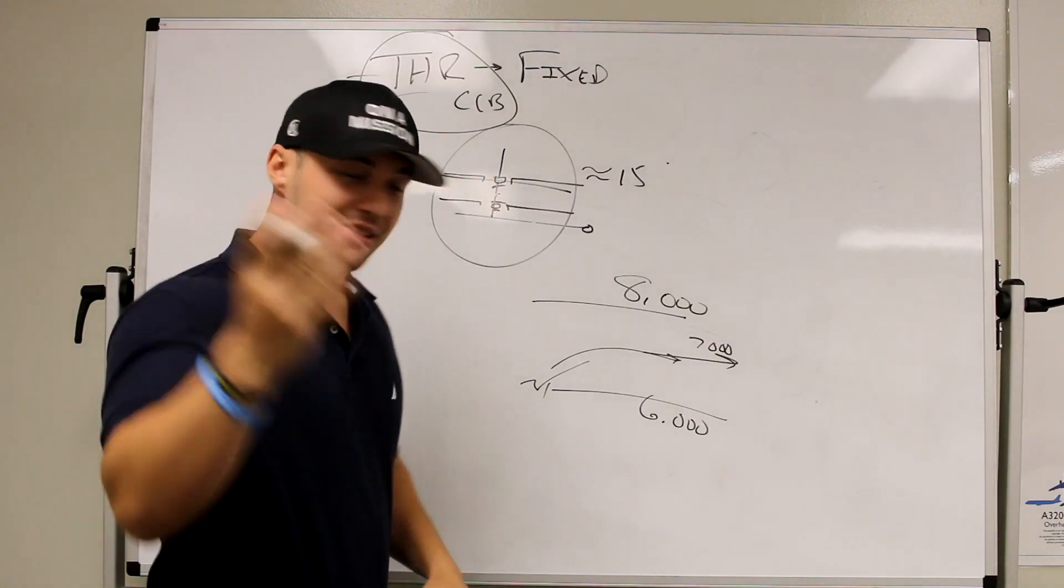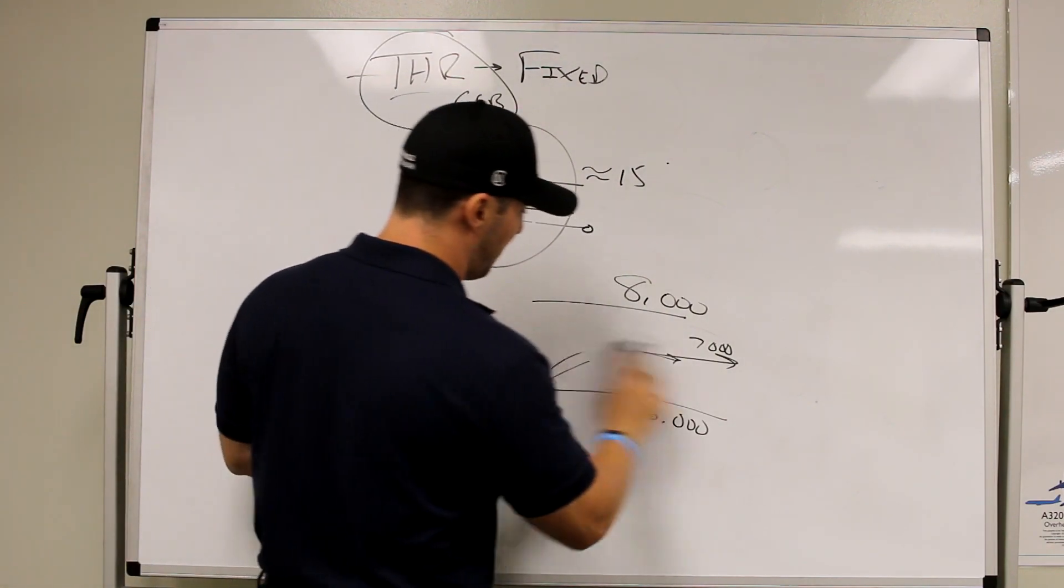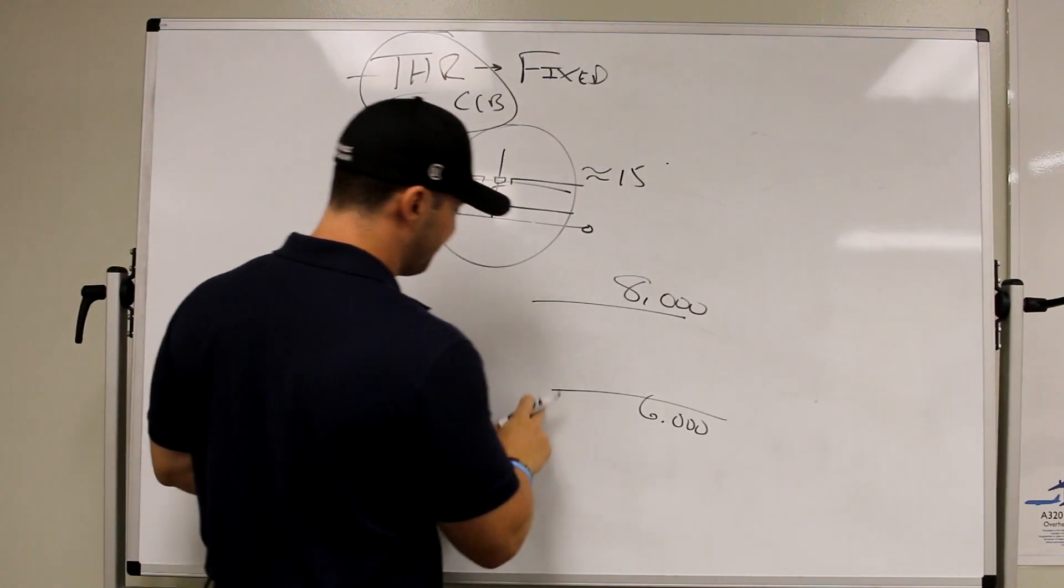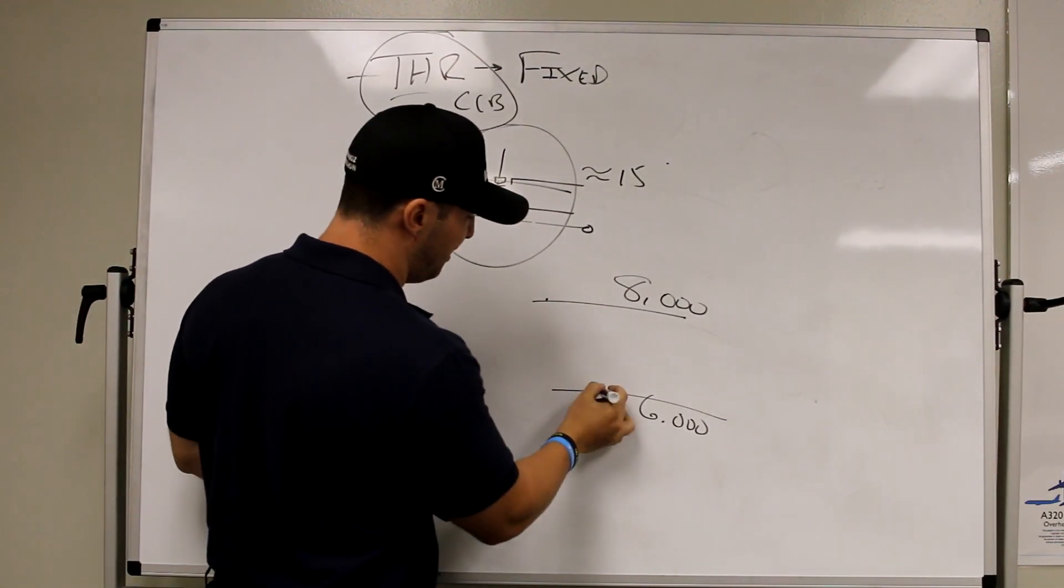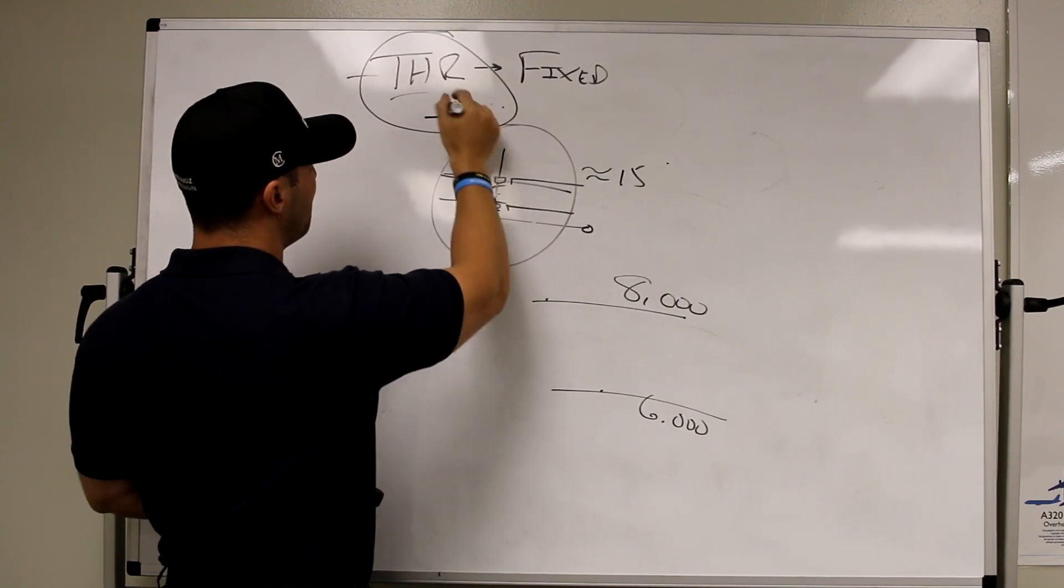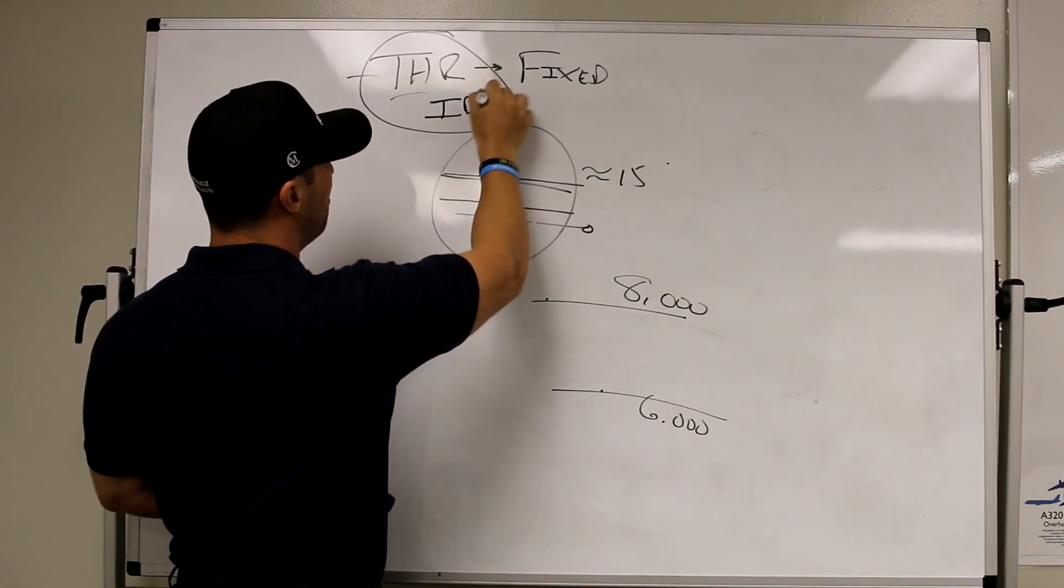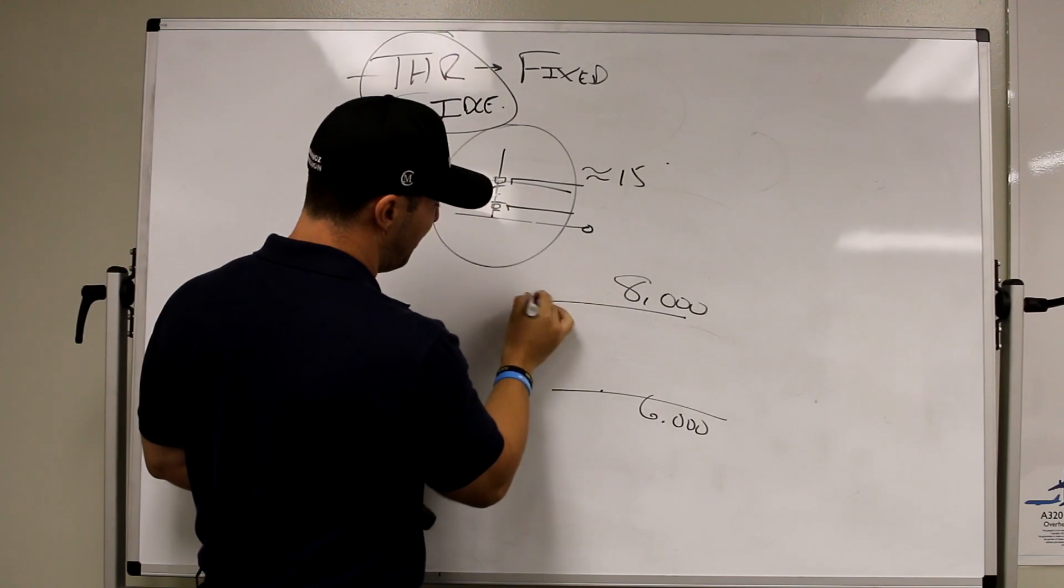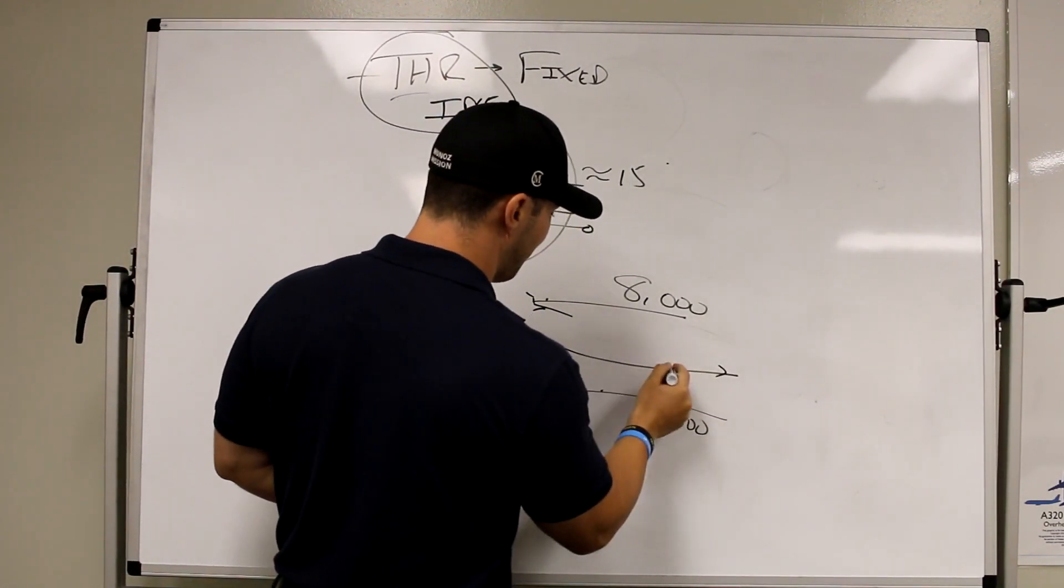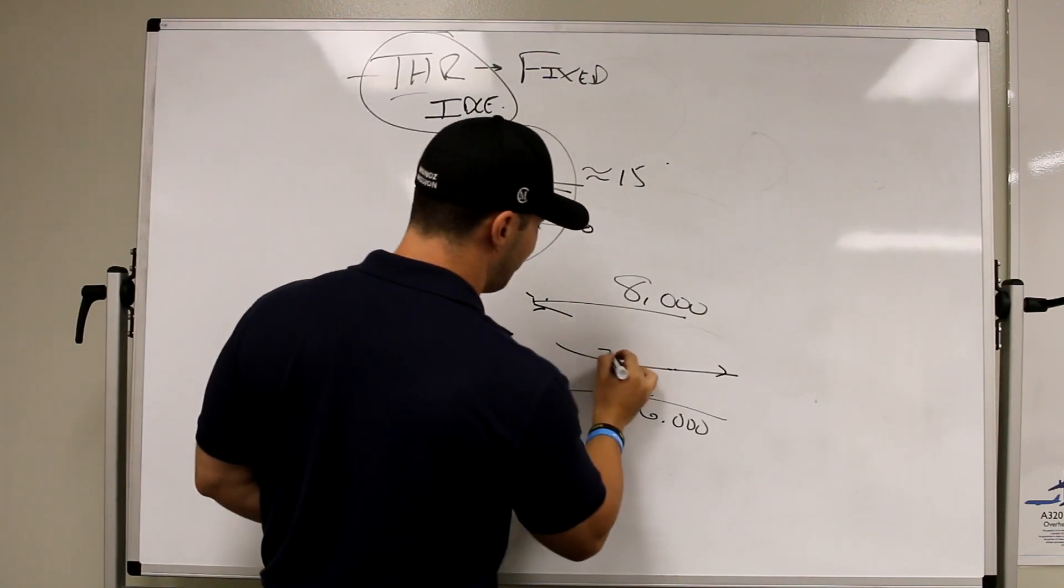Now, descent. Let's say you're descending, we're going to flip this thing around. Let's say you're hand flying out of 8,000, you're descending to 6,000, in which case this is going to swap over not to thrust climb, it'll be thrust idle, open descent. And you're descending out of 8,000 feet here, and you decide for whatever reason you level early and now you're at 7,000 feet. Well, when you level off here at 7,000 feet...